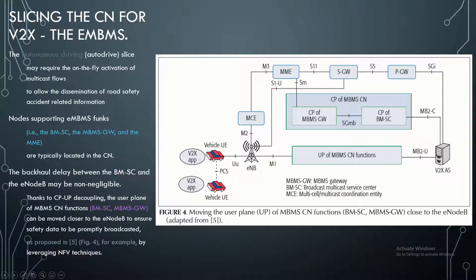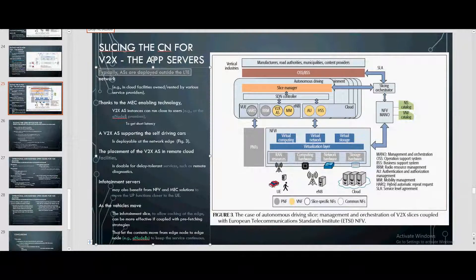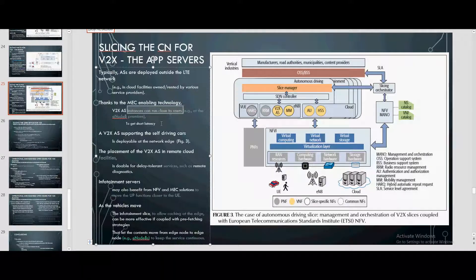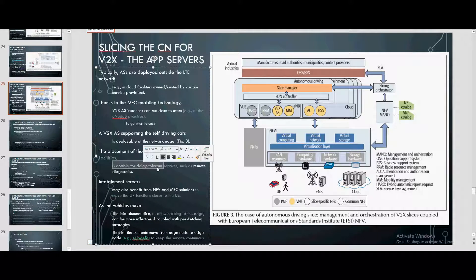For eMBMS, the autonomous driving slice may require on-the-fly activation of multicast flows to allow dissemination of road safety and accident-related information. Nodes supporting eMBMS functions are typically located in the CN, but the backhaul delay between the BMSC and the eNodeB may be non-negligible. Thanks to CP/UP decoupling, the user plane of MBMS functions can be moved closer to the eNodeB to ensure safety data is promptly broadcasted by leveraging NFV techniques. V2XAS instances can run close to users to achieve short latency, and the V2XAS supporting self-driving cars is available at the network edge. Placement of V2XAS in the remote cloud is feasible for delay-tolerant services like remote diagnostics.